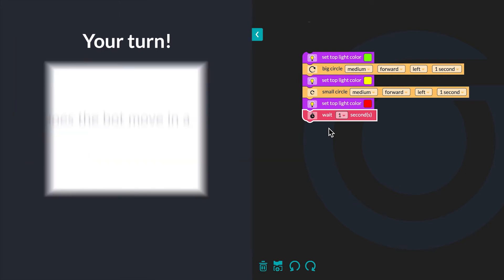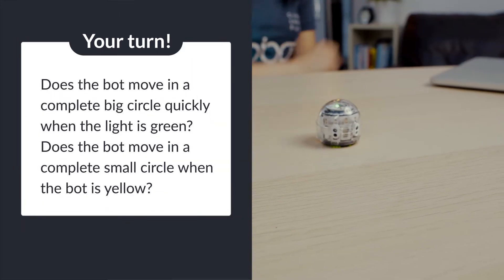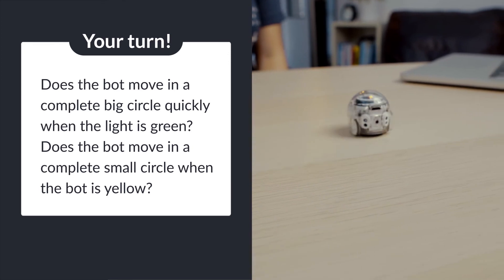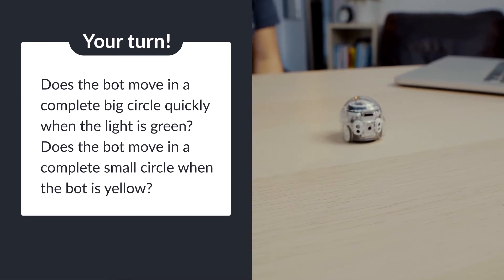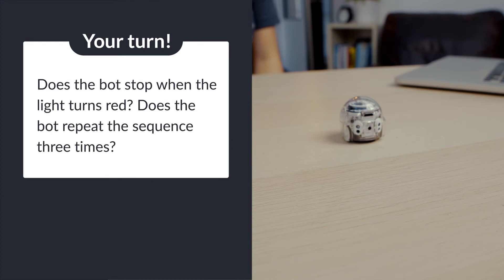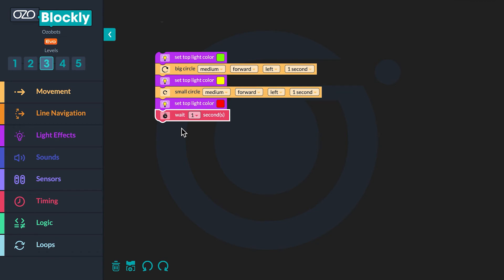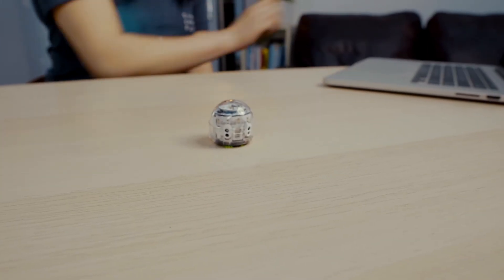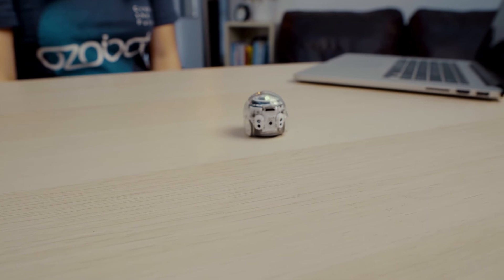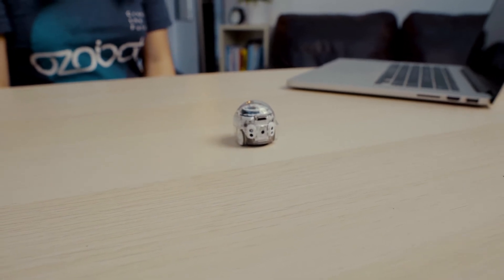Does the bot move in a complete big circle quickly when the light is green? Does the bot move in a complete small circle when the light is yellow? Does the bot stop when the light turns red? Does the bot repeat the sequence three times? When you ran the program you may have noticed three different bugs: the bot did not run enough to complete two circles, the bot did not change speed, and the bot did not repeat the sequence.